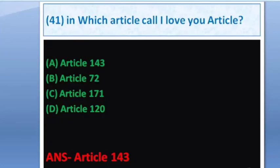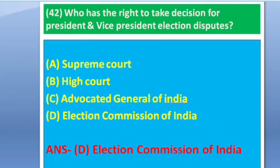Next question: Which is called the 'I Love You' article in the Constitution? Options: Article 143, Article 72, Article 121, Article 120. The answer is option A — Article 143. Next question: Who has the right to decide disputes for President and Vice President elections? Options: Supreme Court, High Court, Advocate General of India, Election Commissioner of India. The answer is option D — Election Commissioner of India.